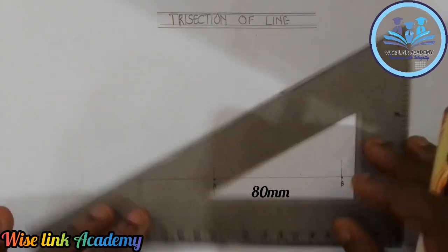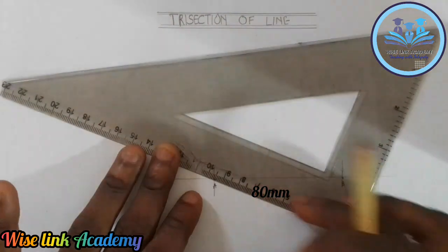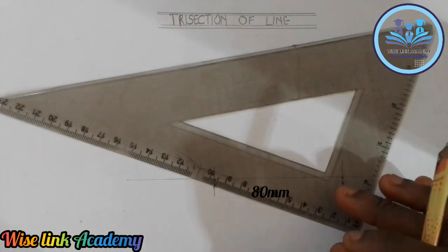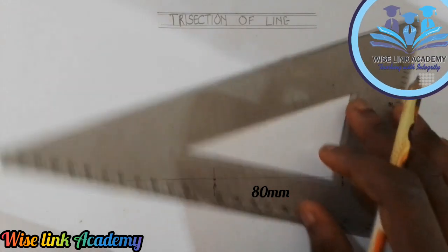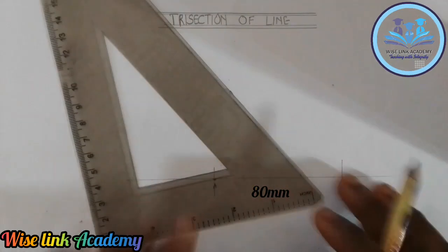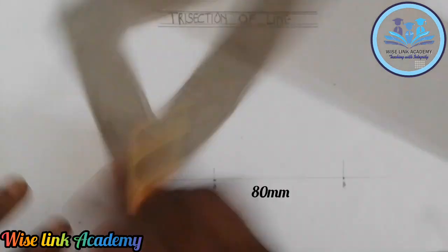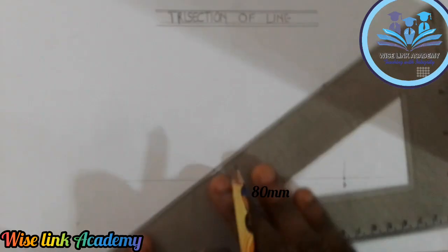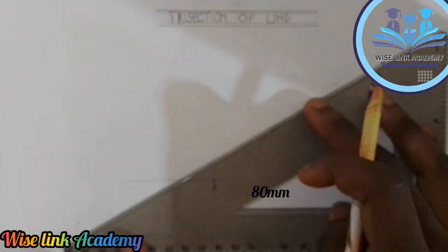If you want to understand why this is 60 and 30, kindly go to my YouTube channel and check on that. So now, I want to divide this. The next thing I'll just do is take it like this, this way 30 degrees this way, likewise like this too is 30 degrees.